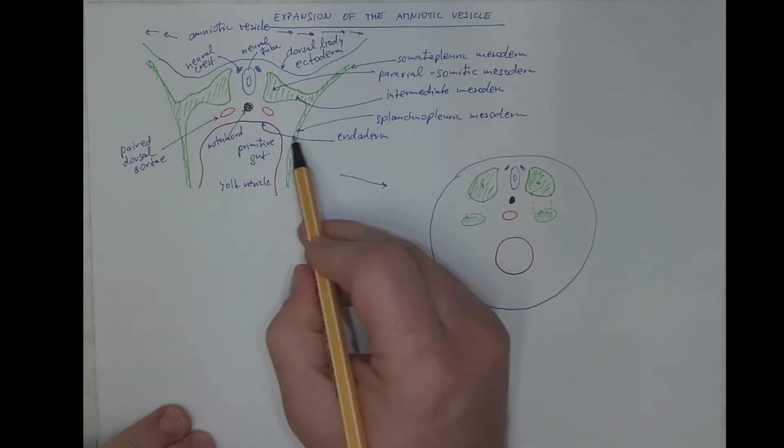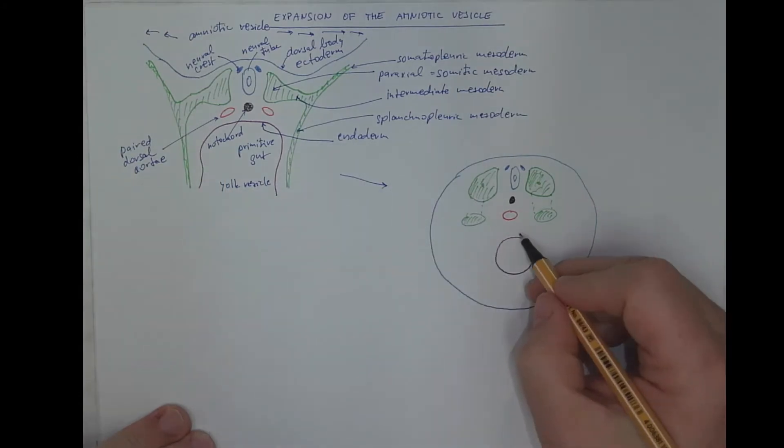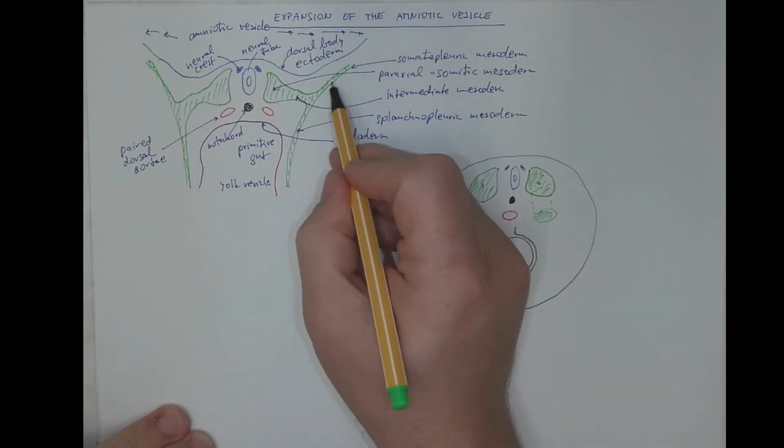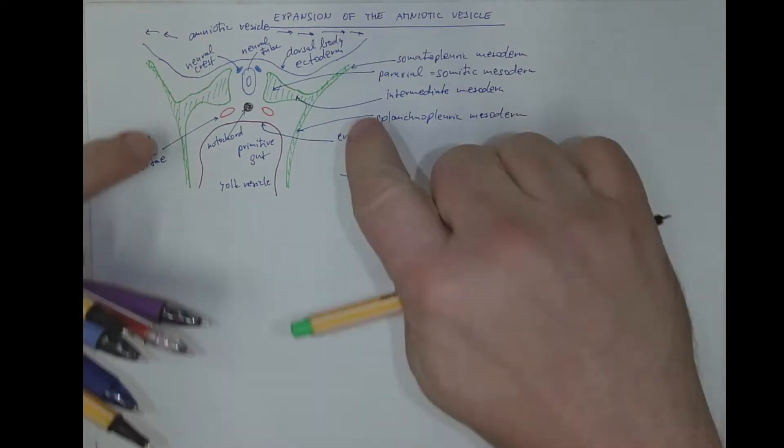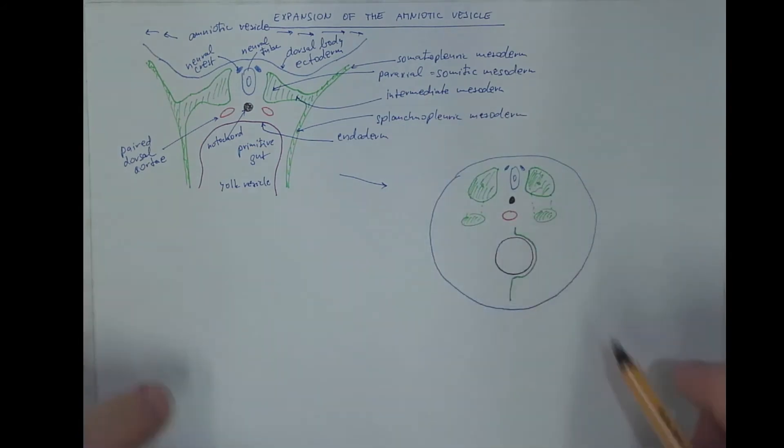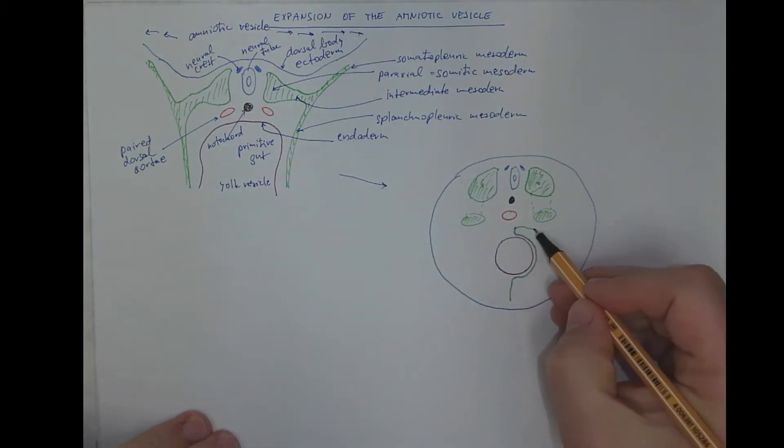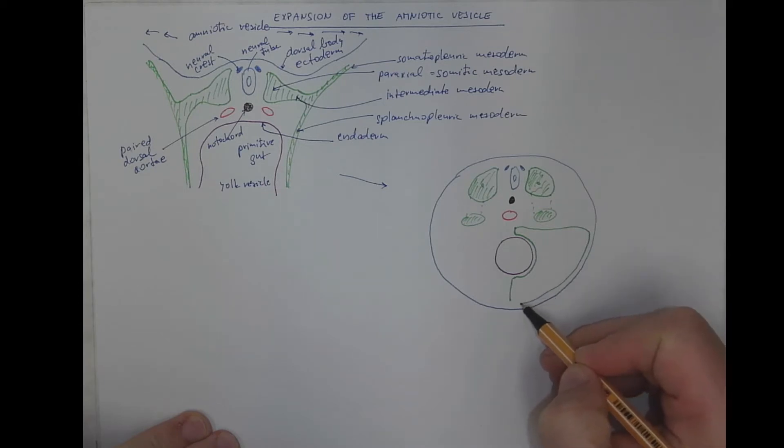And now let's follow the splanchnopleuric mesoderm. The splanchnopleuric mesoderm still accompanies the primitive gut. And the outer layer, the somatopleuric mesoderm, is now adhering to the body wall. And they both close to encircle a body cavity called coelom cavity.